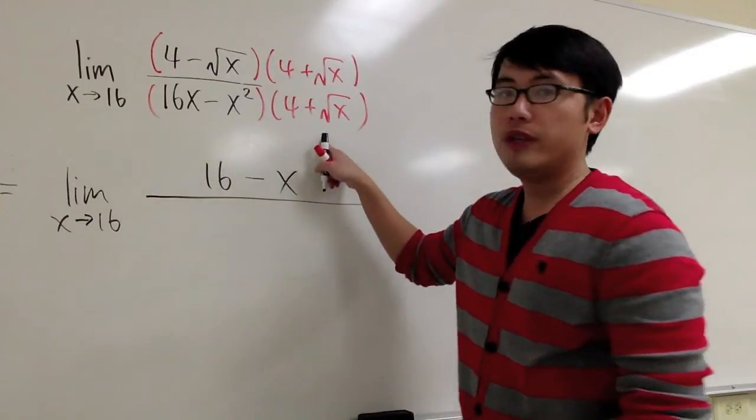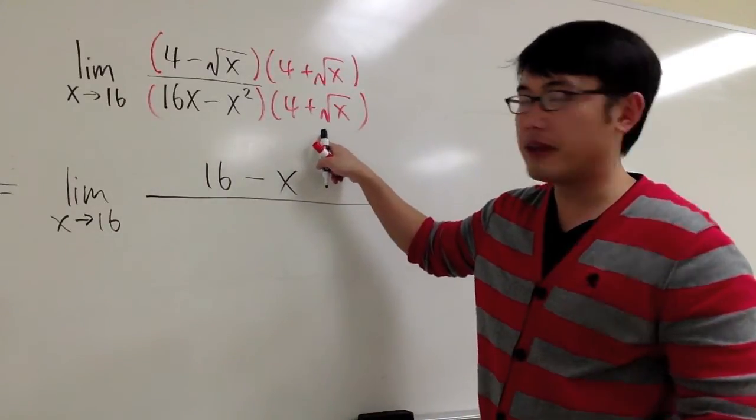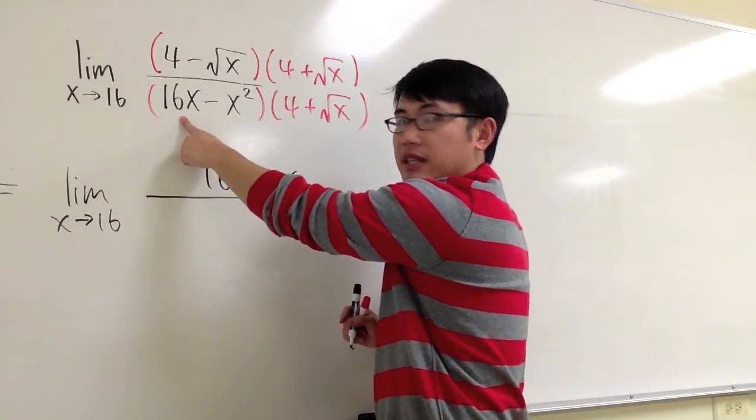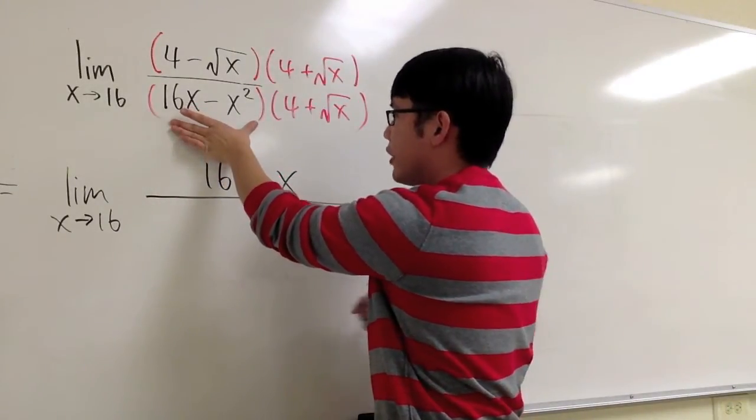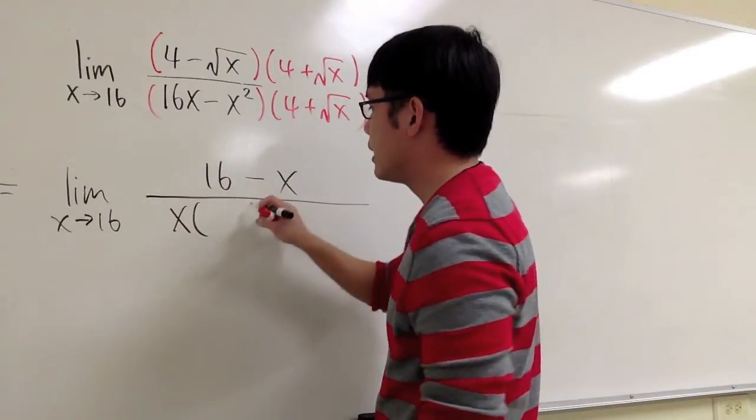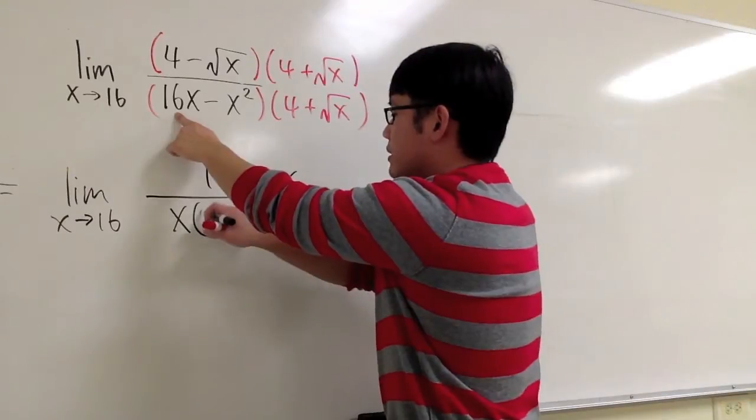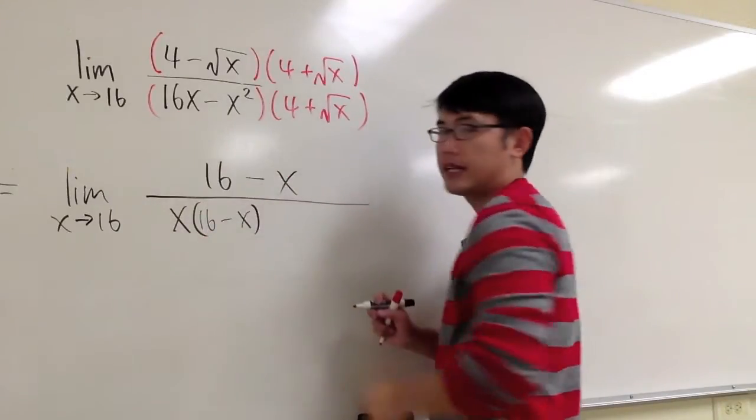On the bottom, we are not going to multiply this out, but we do see that this can be factored because both of them have an x. Look at this, I can take out x, I will have x parentheses, we have the 16 left, minus another x, like that.